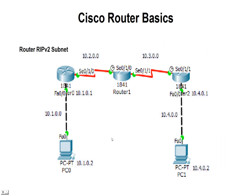I've got a Packet Tracer network set up here. I've got two PCs — PC0 on the left side, PC1 on the right — and above them I have three routers. These are 1841 routers, and we've got both Ethernet ports and serial ports on them. We're going to use RIP version 2 and subnet our 10.0.0.0 class A private address into 10.1.0.0. We're going to take this second octet of 8 bits and add them to our network portion of the address, so the default subnet mask would be 255.255.0.0, and that would apply to all four networks.